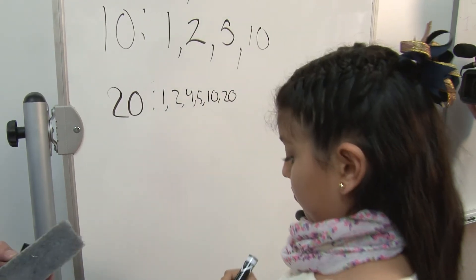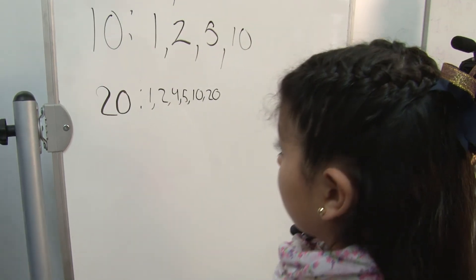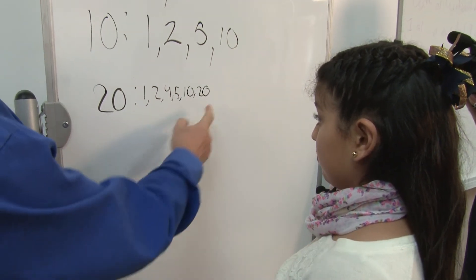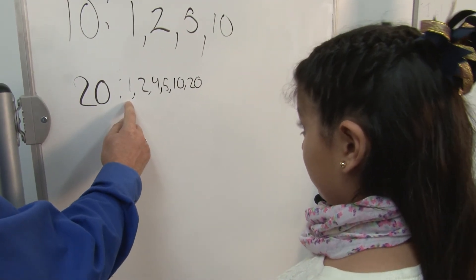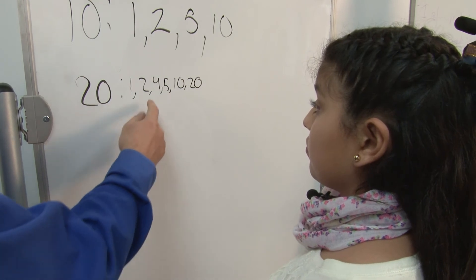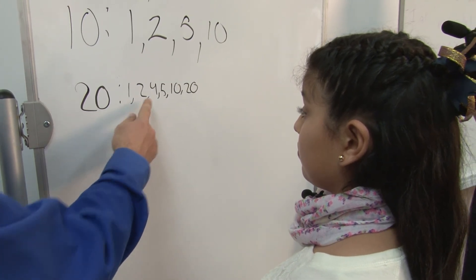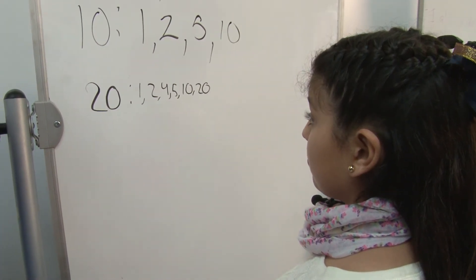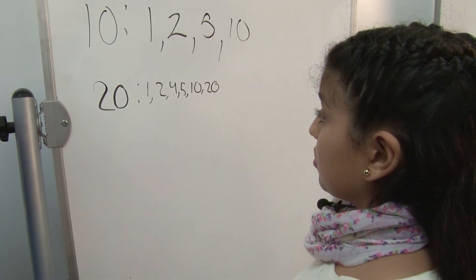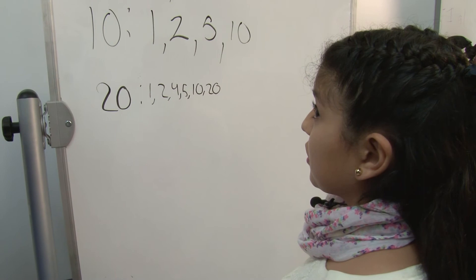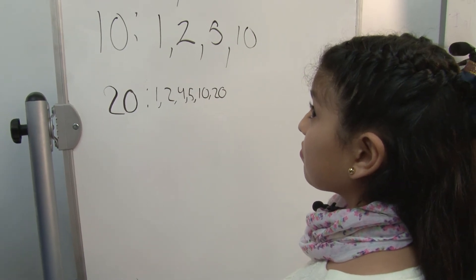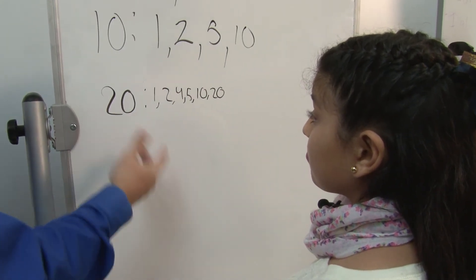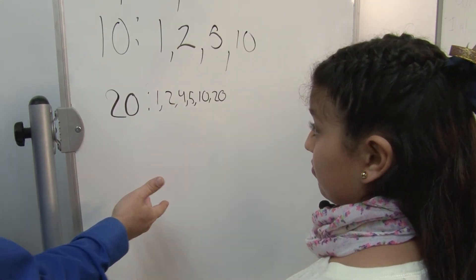Alright, so you've got a lot of numbers there. We know that 1 and the number itself will always go into any number. How do you know 2 went into that so quick? Because 10 times 2 is 20. Plus it's an even number, you know 2 will go into it.